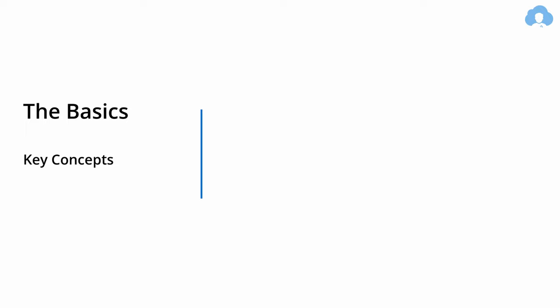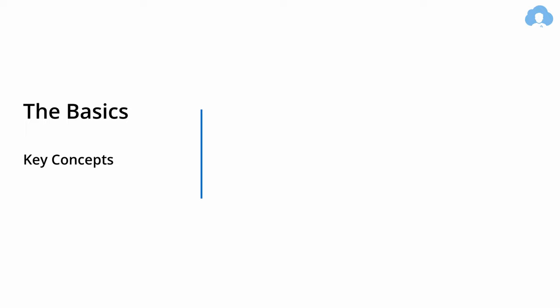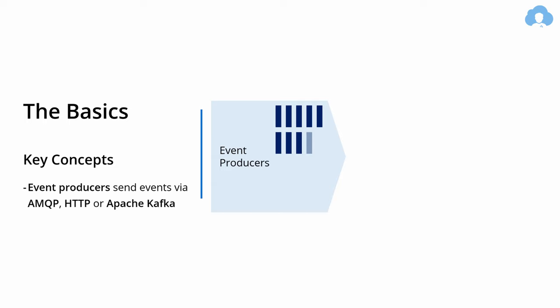So let's talk about basics, because when working with Event Hubs, you're going to get introduced to quite a few new terms that you'll need to learn. First of all, we have event producers. Those are applications and services that will be sending your event data to the Event Hub through AMQP — which stands for Advanced Message Queuing Protocol — HTTP, or Apache Kafka. Those services are your sources of events.